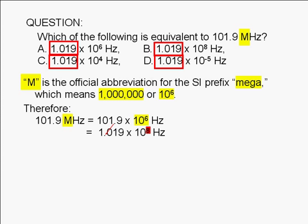From 10 to the 6, our power of 10 becomes 10 to the 8. The correct answer is 1.019 times 10 to the 8.